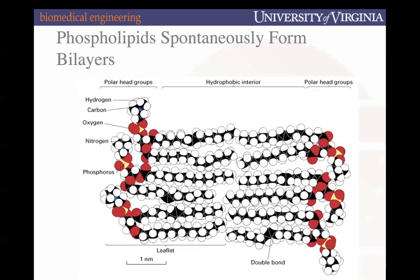Regarding how long the tails are: the phospholipids are synthesized by enzymes, and the synthesis determines how long the tail is and subsequent attachment of other groups that create the whole phospholipid. On the next slide we'll talk about the thickness of the cell membrane — that will also help clarify the distance.